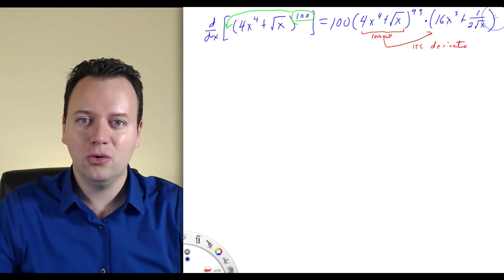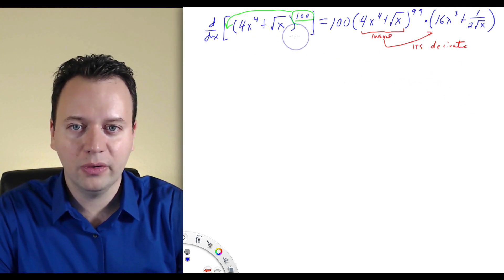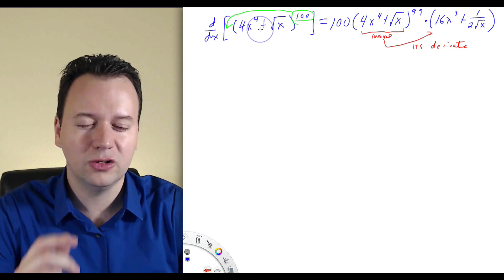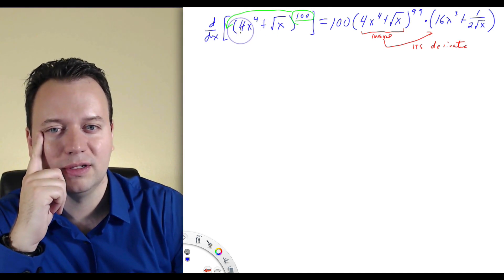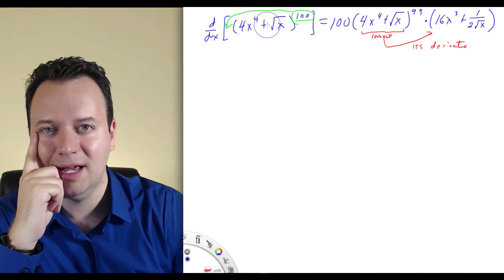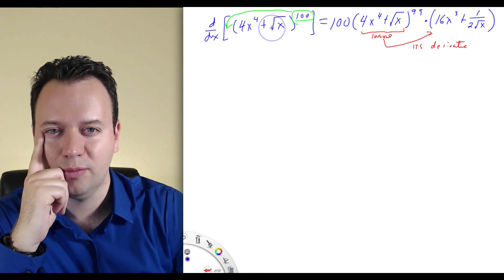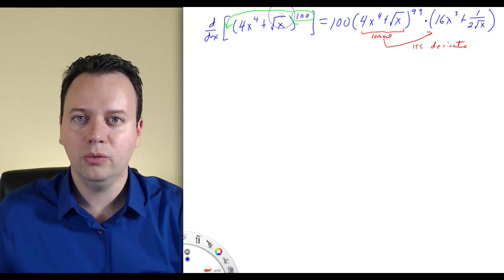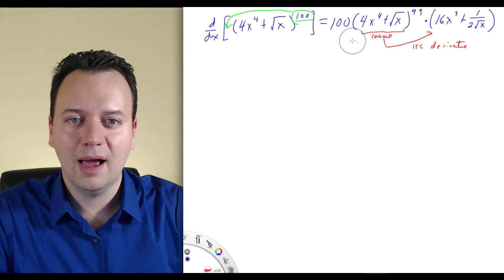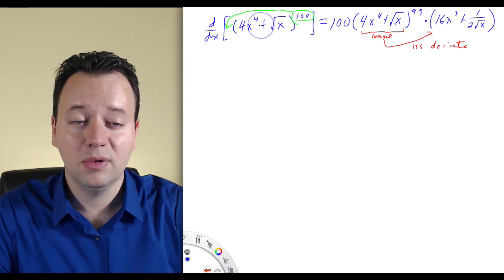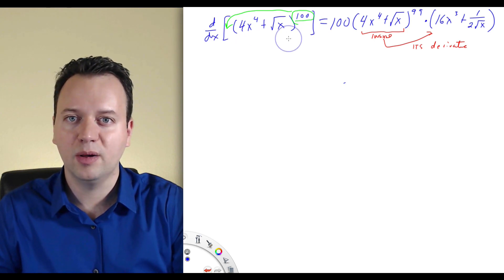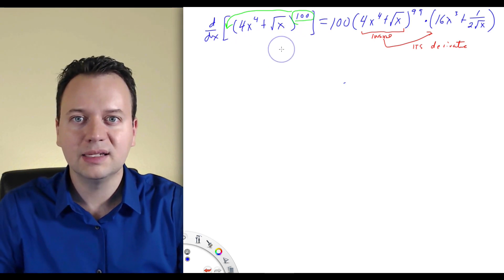So the derivative of quantity 4x to the 4th plus square root of x to the 100th is 100 times that quantity to the 99th, times the quantity 16x cubed plus 1 over 2 square root of x. It's already a fairly complicated-looking derivative obtained quickly. It would probably take forever to figure this out using the limit definition — what would you do with 4 times x plus h to the 4th plus square root of x plus h, all to the 100th? But with the rule, it's straightforward: 100 comes down, turns to the 99, multiply by the derivative of the inside.